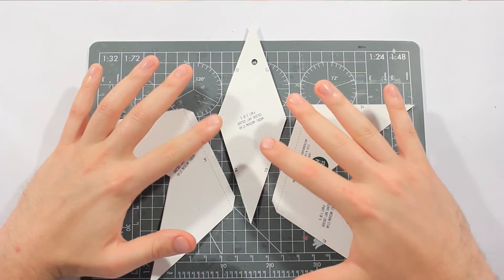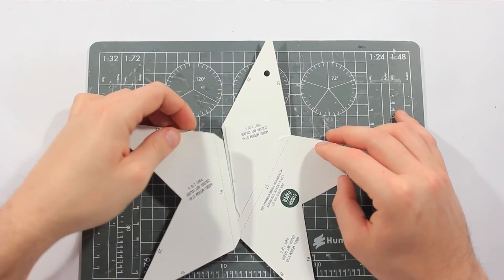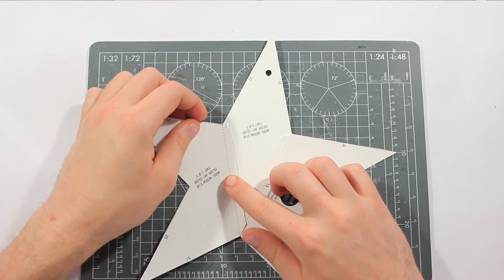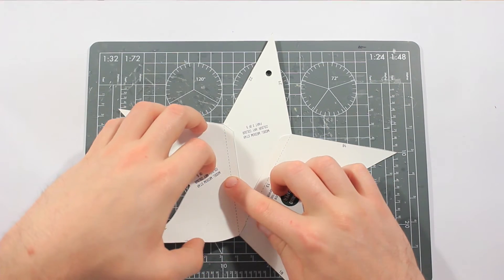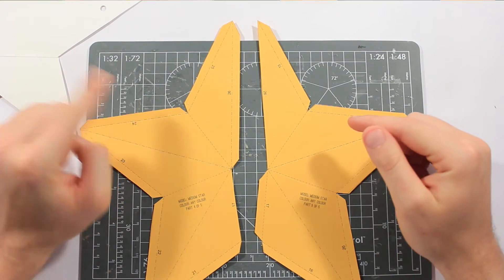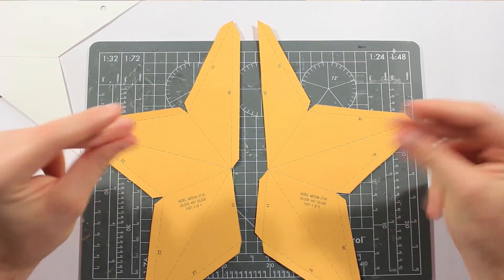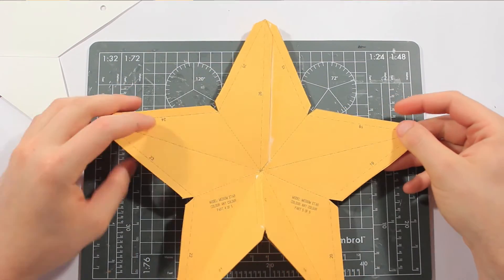We don't need to score that edge, because this is the flat side. These two need to be glued, the same as the grey star. There we go. So that's glued together.